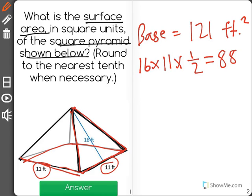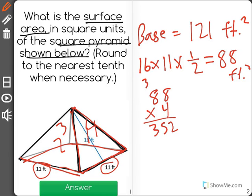Now I need to take that 88 feet squared and multiply it by four, because we have one, two, three, four triangular faces. So when I multiply 88 times four, you'll see that I get an answer of 352.